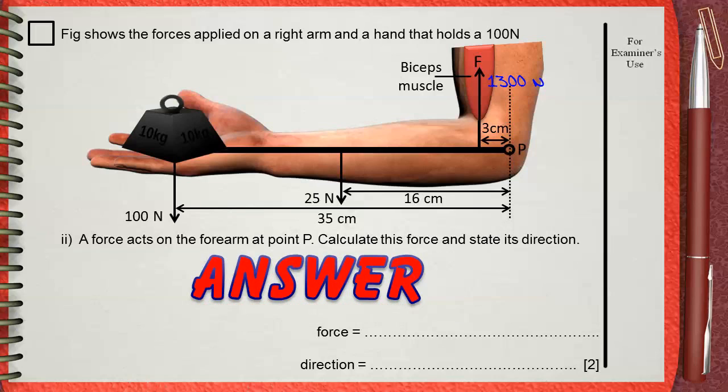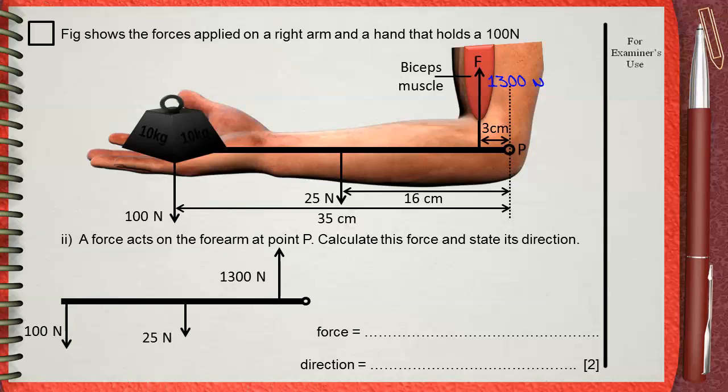If we draw a diagram for the forces on the forearm, we will find that 100 newtons downwards and 25 newtons downwards are opposed by 1300 newtons upwards. But wait, it's clear that there is a missing force because the first condition of equilibrium is that the total force upwards must equal the total force downwards.